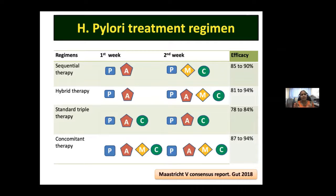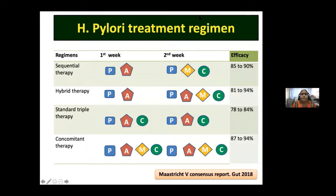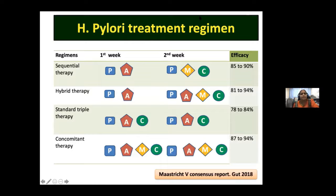On bloating timing: immediate bloating just after a meal is usually related to gastric bloating, but patients with small bowel bacterial overgrowth can have delayed bloating. There is a lot of overlap and it is difficult to differentiate strictly on timing alone. On whether classification of dyspepsia is necessary even when treatment is PPI or prokinetics: classification is very important because it helps in choosing therapy and differs in prognosis — patients should be classified systematically.